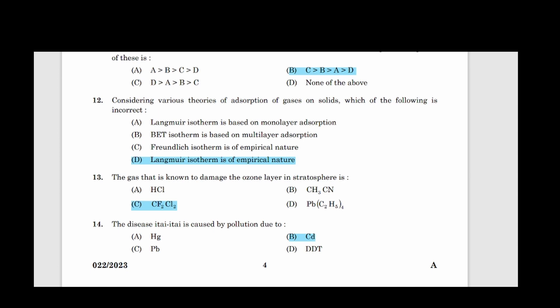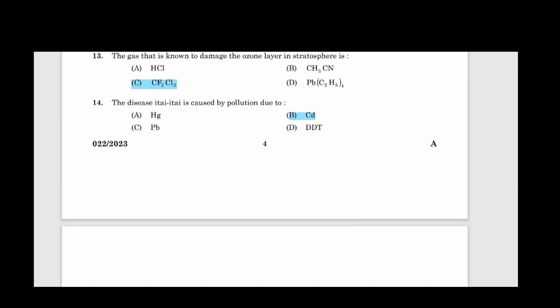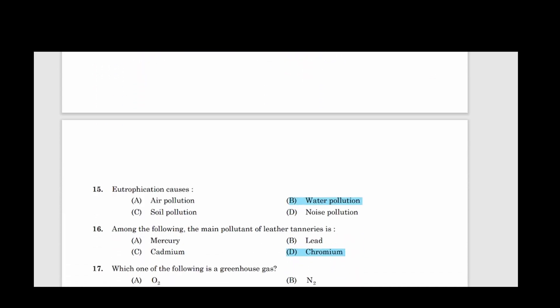Thirteenth question: The gas that is known to damage the ozone layer in stratosphere is. Correct answer option C, CF2Cl2. Fourteenth question: The disease itai-itai is caused by pollution due to. Correct answer option B, Cadmium. Fifteenth question: Eutrophication causes. Correct answer option B, Water pollution.